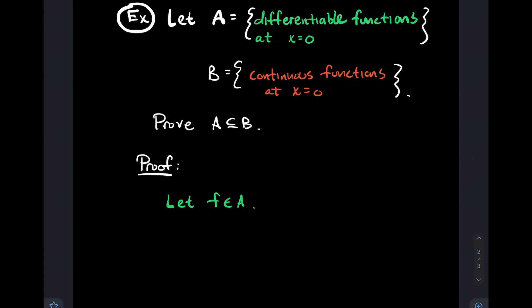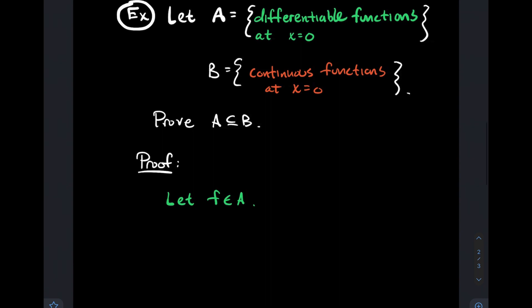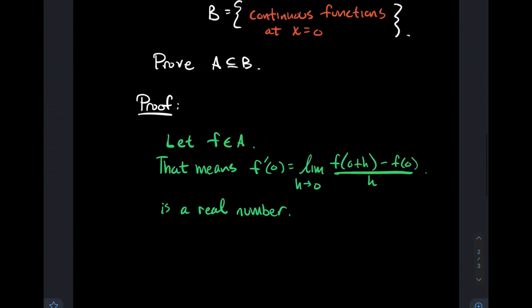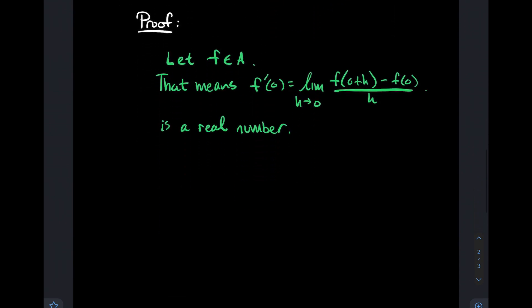I've got to think about what's the definition of the derivative of a function. That means that f'(0) is the limit, as h goes to 0, of that difference quotient: f(0+h) minus f(0), all divided by h. The point is that that limit is a real number, and we denote that real number by f'(0). So that limit exists, it's a real number, and it's f'(0).